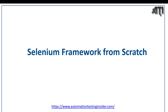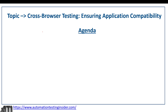Hello everyone, welcome back to another video of Automation Testing Insider. This is part 12 of the Selenium framework development series from scratch. Today we are going to talk about cross-browser testing, which ensures application compatibility. In the previous video we talked about setting up parallel testing in our framework, and it is working perfectly fine. Today we'll focus on cross-browser testing — it will be very quick because the setup has already been done in our framework. If you are following the series from the beginning, you'll know we have already done the settings in the base class for different browsers and how we pick the value from config.properties.